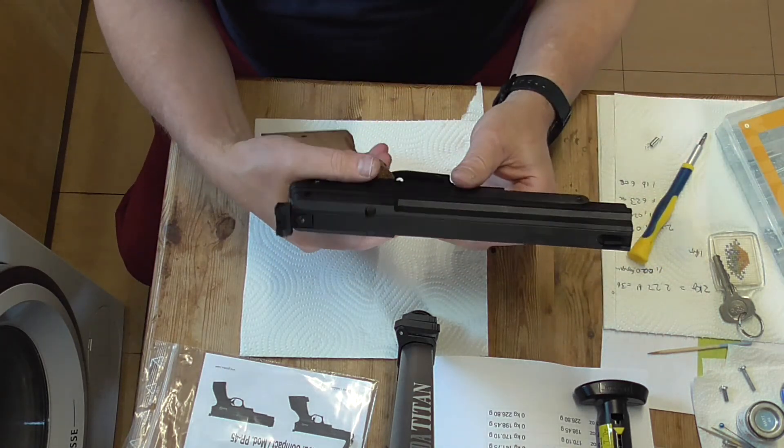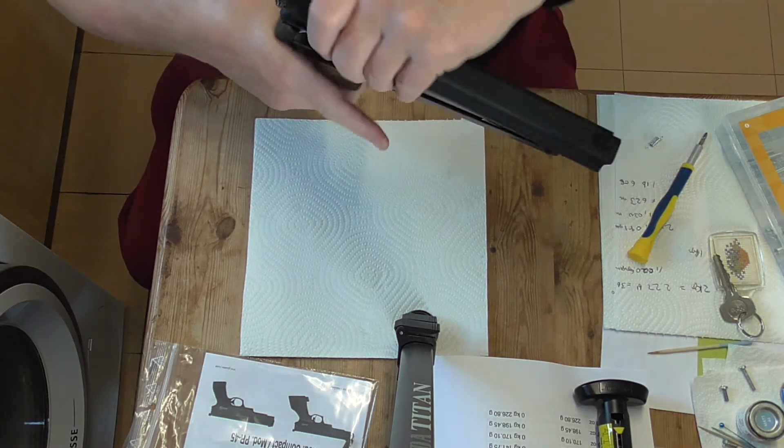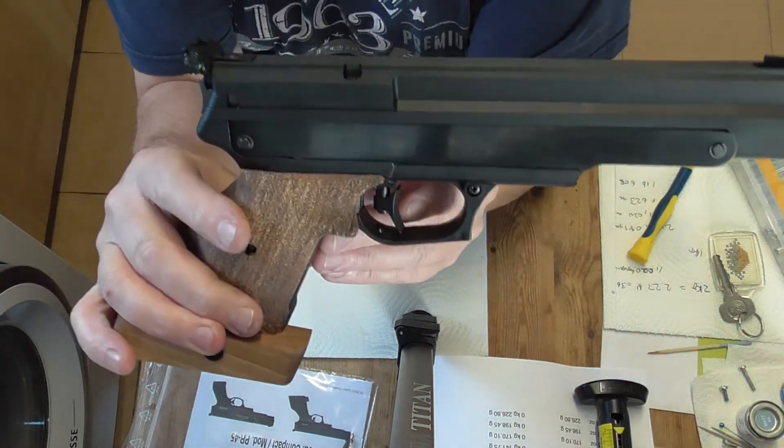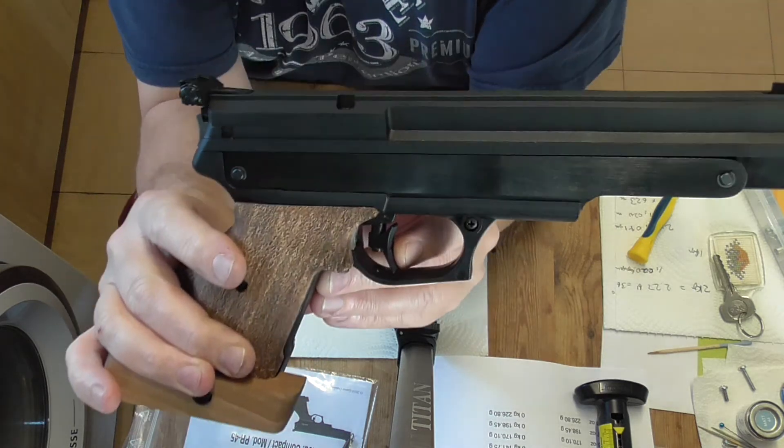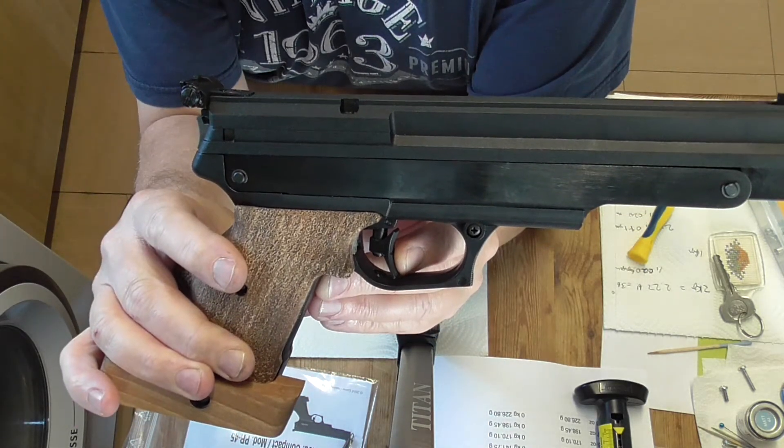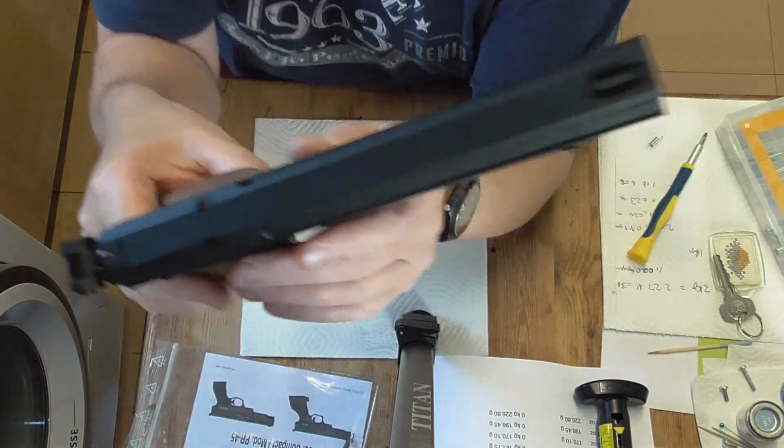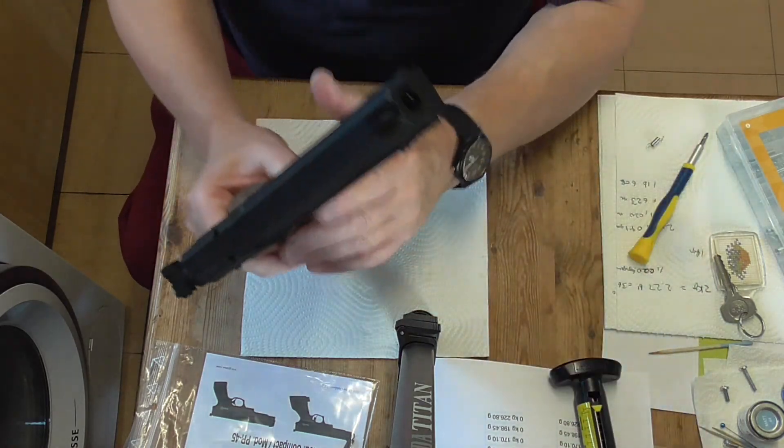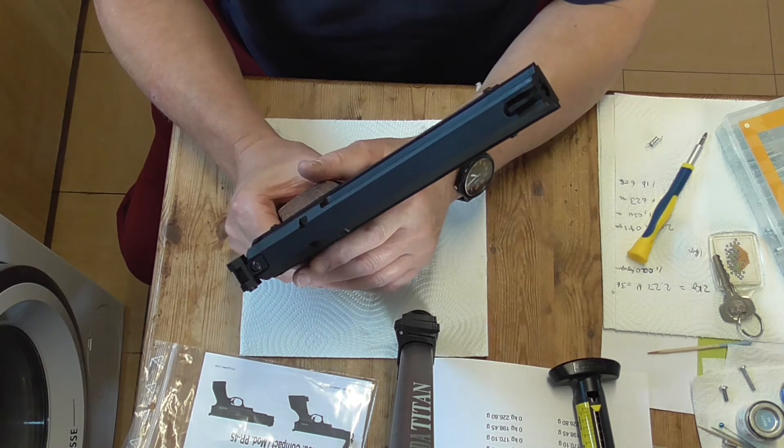Now, the good thing about pneumatics and PCPs is you can dry fire. So we'll cock the pistol, and you'll see the trigger now. That's your first stage, and then it goes really crisply, like that. And using this trigger pull gauge, it's doing one pound and six ounces, which equates to about 620 grams, which is perfect.